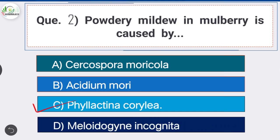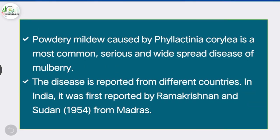Phylactinia corelia. Powdery mildew caused by Phylactinia corelia is the most common, serious and widespread disease of mulberry. The disease is reported from different countries. In India it was first reported by Ramakrishnan and Sudhan in 1954 from Madras.